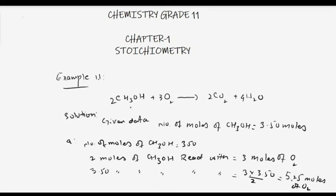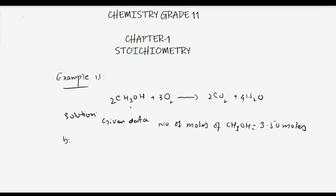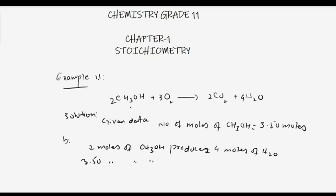For part (b), how many moles of water are produced? The given data is that we have 3.50 moles of methanol. From the balanced chemical equation, 2 moles of methanol react with oxygen to produce 4 moles of water. If we have 3.50 moles of methanol, they will produce (4 × 3.50) / 2.